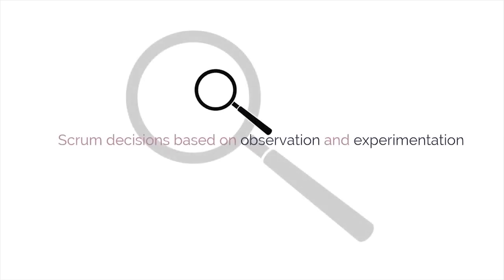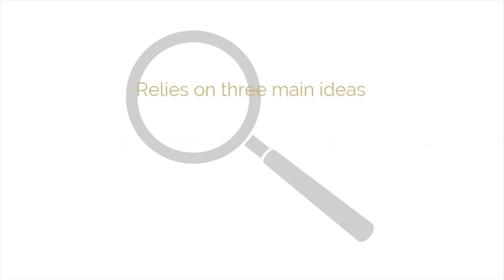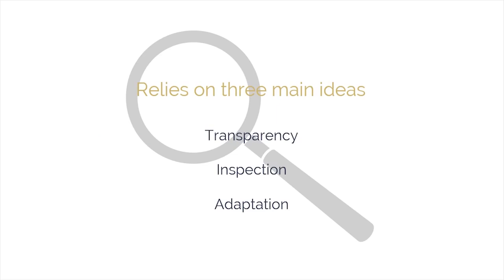In Scrum, decisions are based on observation and experimentation rather than on detailed upfront planning. Empirical process control relies on three main ideas: transparency, inspection, and adaptation. We'll now discuss these three main ideas with the help of a few diagrams.